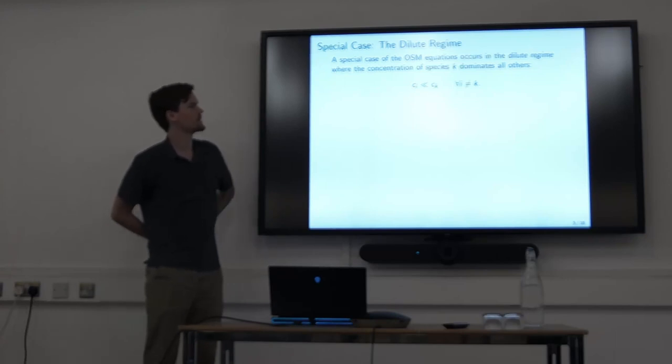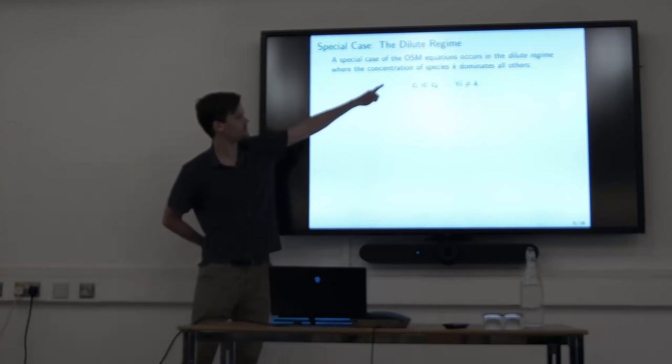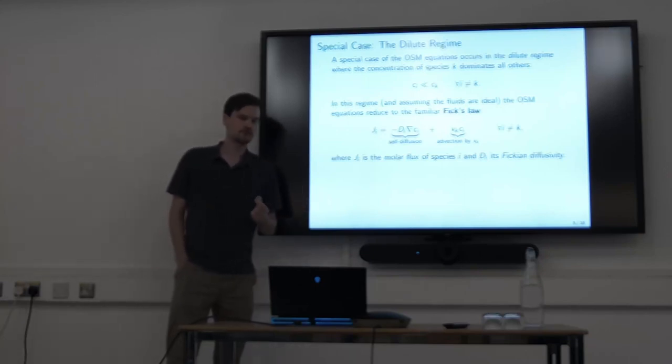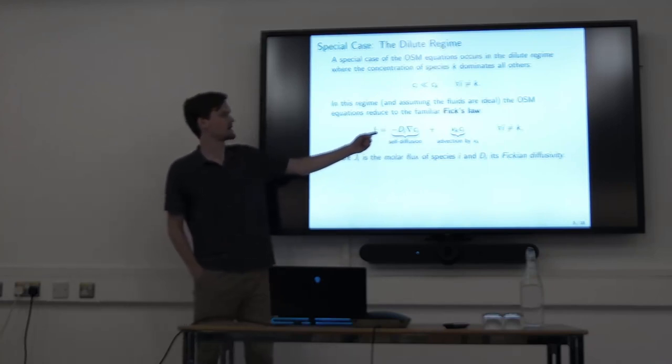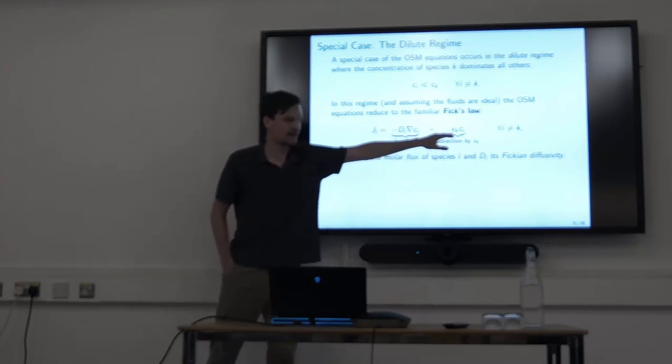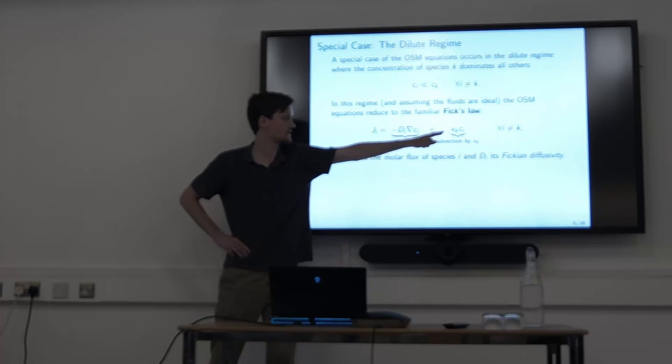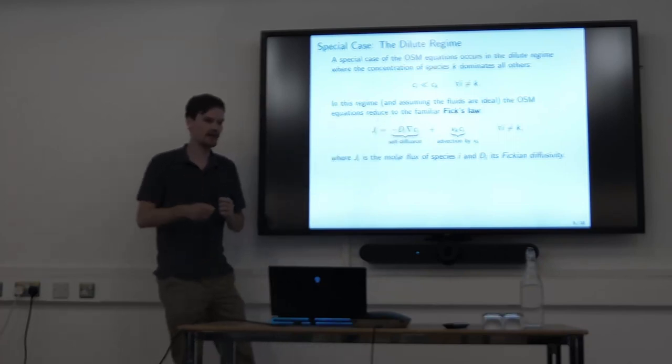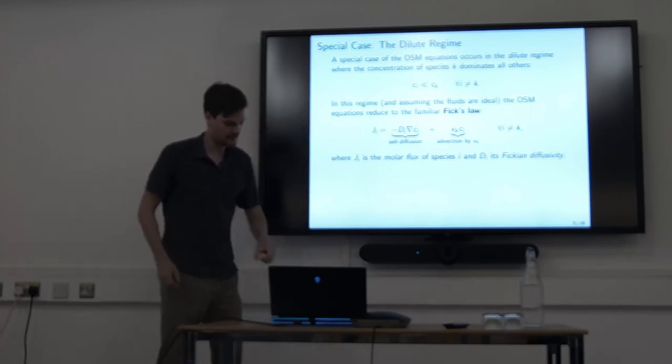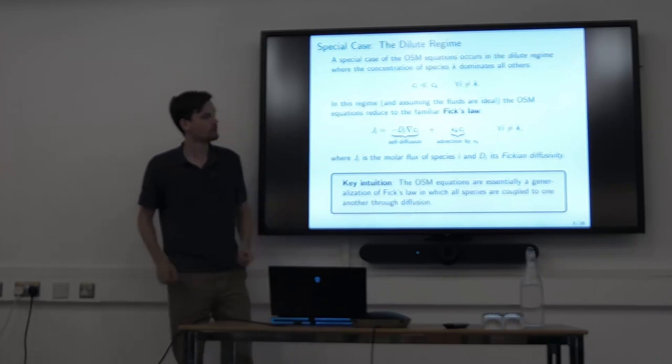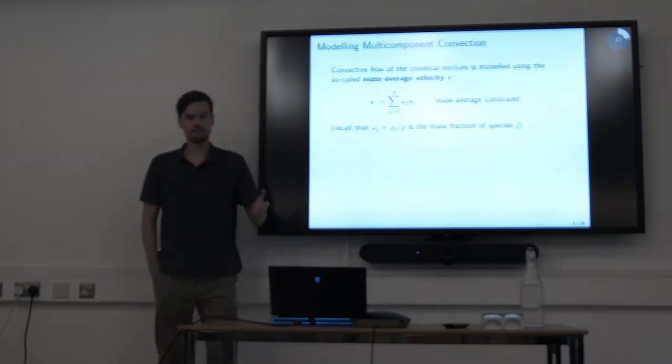To get better intuition, we can consider the dilute regime. Suppose the concentration of species k dominates all others, so Ci is much less than Ck. In this regime, if you assume the fluids are ideal, you can show that the OSM equations reduce to the usual Fick's law, which says that the molar flux of species i, Ji, is given by this self-diffusion term proportional to the gradient of Ci, and then this convective term. But note that the convection only occurs through the velocity of species k, Vk. So Fick's law is really only coupling species i to species k. There's no coupling between species i and species j for any j not equal to k. The OSM equations are essentially generalizing Fick's law, allowing all species to be coupled to one another simultaneously.